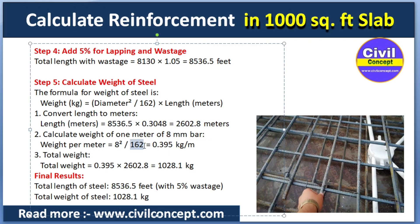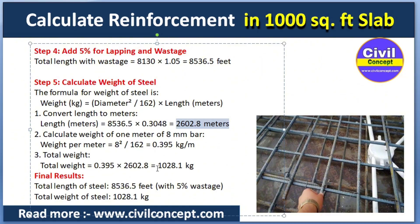Weight per meter of 8 mm bar = 8² / 162 × 1 = 0.395 kg per meter. Total weight of rebar = 0.395 × 2602.8 = 1028.1 kg. So the total length of rebar with 5 percent wastage is 8536.5 feet, and the total weight of steel is approximately 1028.1 kg.